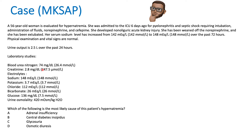Osmotic diuresis can explain the water loss and polyuria. If it's not glucose, what's causing it? In this case, it's the BUN. BUN is osmotically active, and the serum osmolality equation includes sodium, glucose, and BUN. With significant AKI, an elevated BUN can drive an osmotic diuresis with increased urine output.